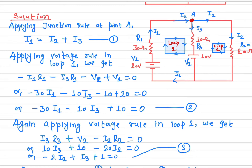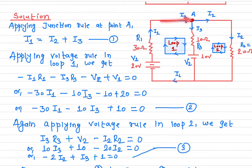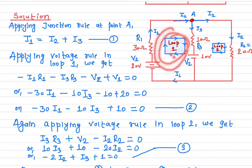Now let's apply the junction rule at this point. The junction rule gives you a relation between the currents. At this junction the incoming current is I1 and the outgoing currents are I2 and I3. Incoming current has to equal the outgoing current, so I1 = I2 + I3.